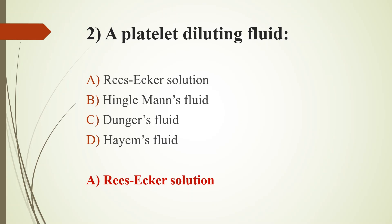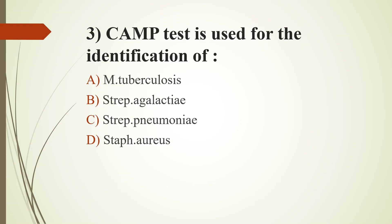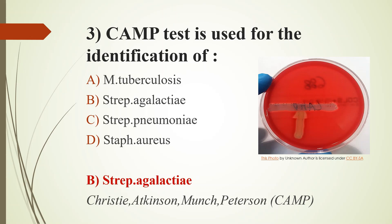Third question: CAMP test used for the detection of — Option A: Mycobacterium tuberculosis. Option B: Streptococcus agalactiae. Option C: Streptococcus pneumoniae. Option D: Staphylococcus aureus. Answer is Option B, Streptococcus agalactiae.